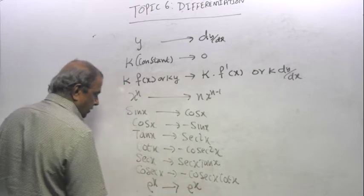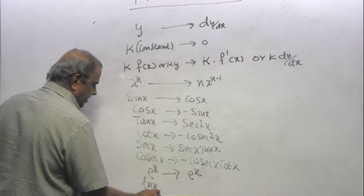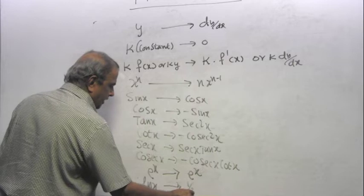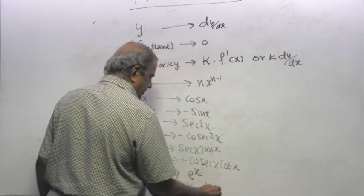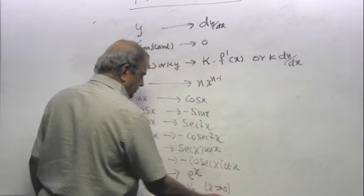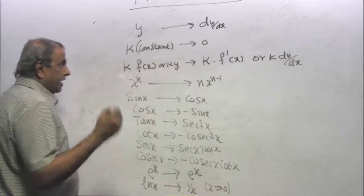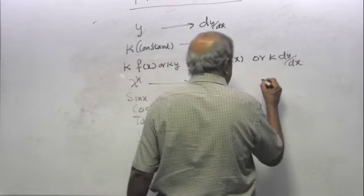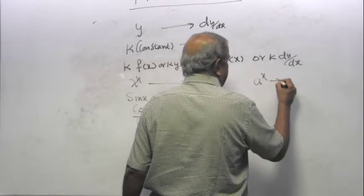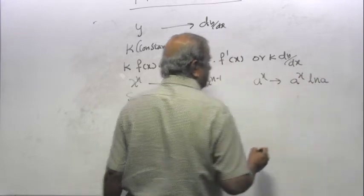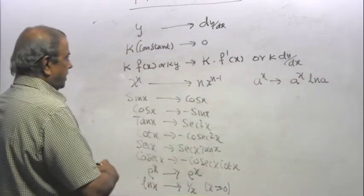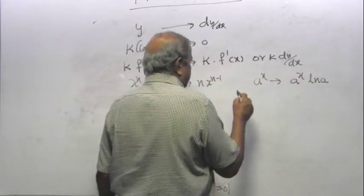E power X gives you E power X. Ln X gives you 1 over X. Of course X is greater than 0. This one may not be in the formula book. A power X gives you A power X ln A. I will prove that later. And the 3, 4 rules.